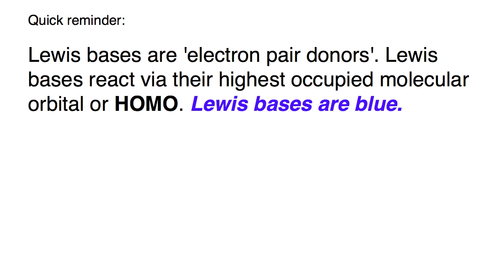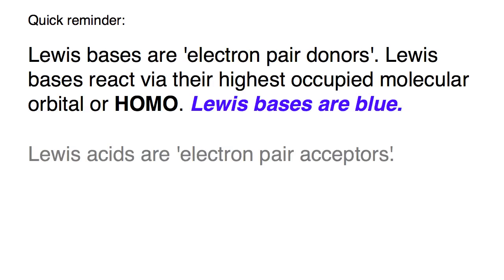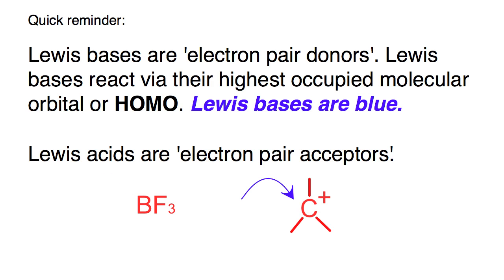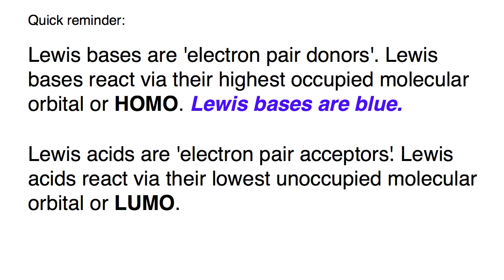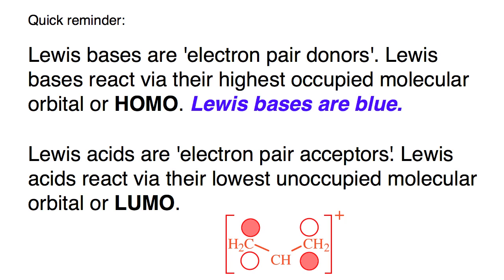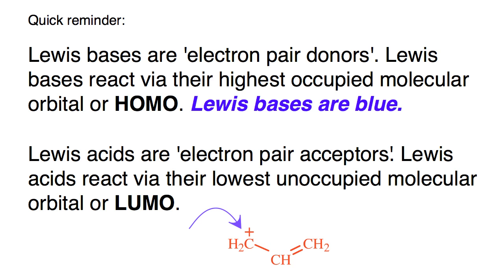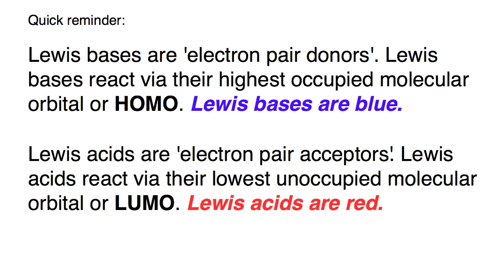In the Chemogenesis analysis, Lewis bases are coloured blue. Lewis acids are electron pair acceptors — for example, boron trifluoride, where a curly arrow goes towards the vacant orbital on BF3, or a carbocation. The curly arrow always goes towards this electron-deficient carbon centre. Lewis acids also react via their lowest unoccupied molecular orbital, or LUMO. For example, the allyl cation is susceptible to attack by a lone pair of electrons. In the Chemogenesis analysis, Lewis acids are coloured red.